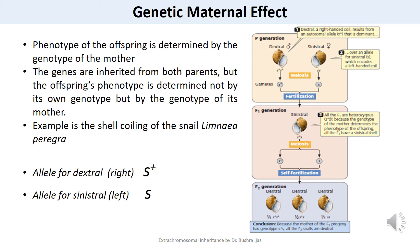An excellent example is the shell coiling of a snail called Limnaea peregra. In most snails of this species, the shell coils to the right, termed dextral coiling. However, some snails possess left-hand coiling, called sinistral coiling. The direction of coiling is determined by a pair of alleles: the dextral allele represented by S⁺ is dominant over the sinistral allele represented by s. However, the direction of coiling is determined not by the snail's own genotype but by the genotype of its mother. The direction of coiling is affected by the way the cytoplasm divides soon after fertilization, determined by substances provided by the mother and passed to the offspring in the cytoplasm of the egg.